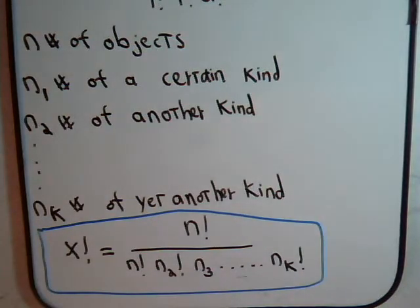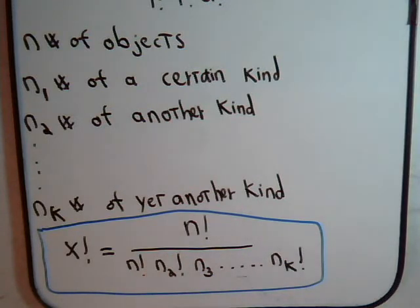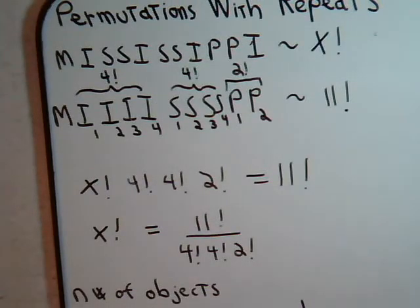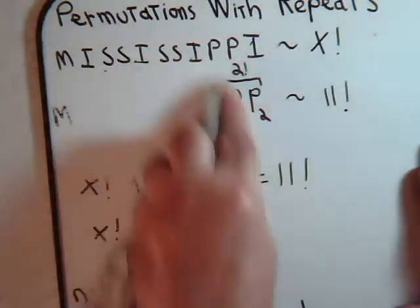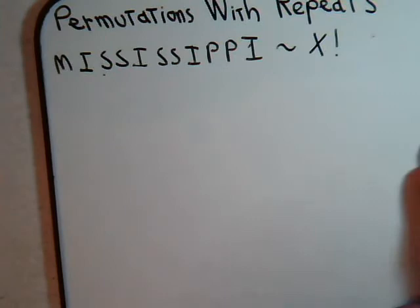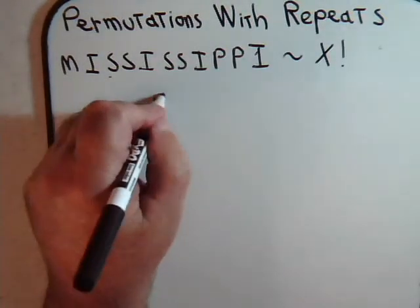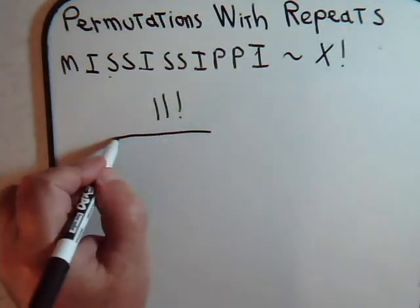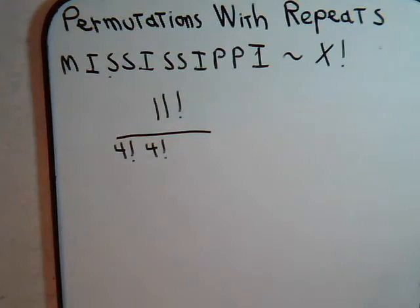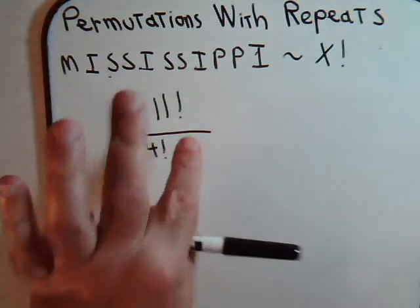We have n number of objects and we're asking how many ways all of them can be permuted. For the word Mississippi, we have 11 letters, so the number of permutations is not 11 factorial but rather the total number of letters factorial divided by the repeats: four of the I's are repeated, four of the S's are repeated, and two of the P's are repeated.